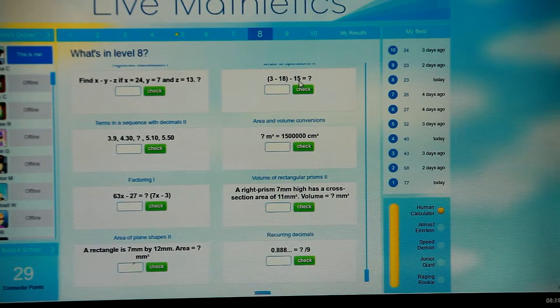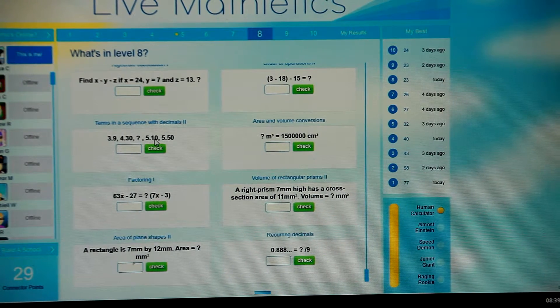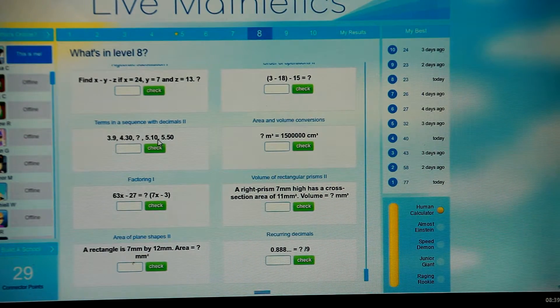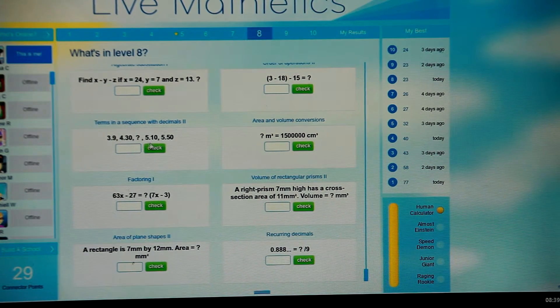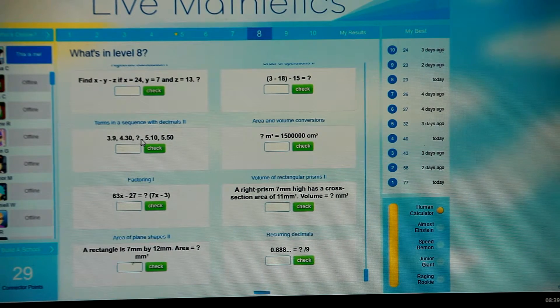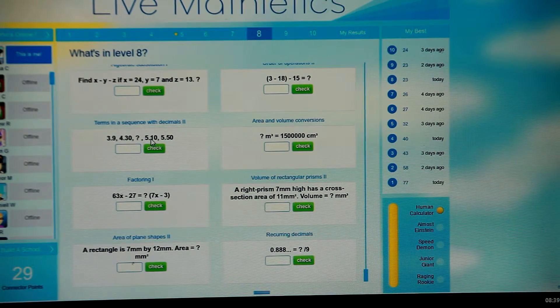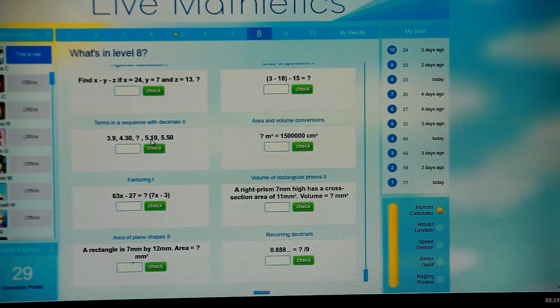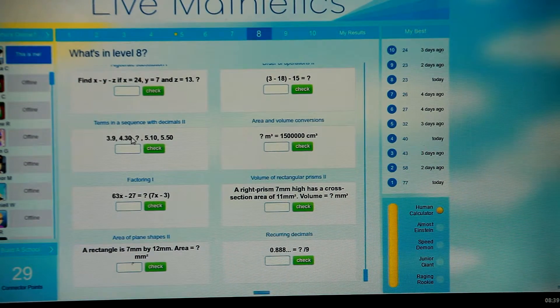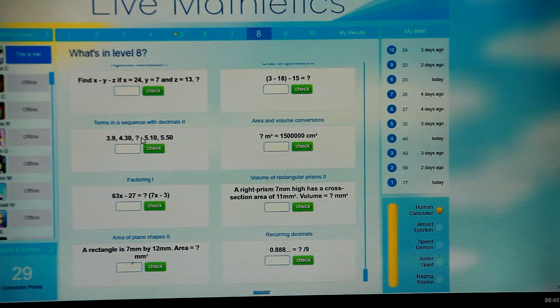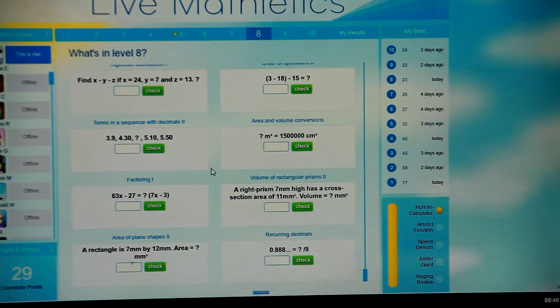In a sequence like this, you're looking for the average between the two figures on either side. If you can see that it appears to be going up or down by an equal amount with each thing, it's called an arithmetic progression. So you can add 4.3 and 5.1, and that gives you 9.4, and you can divide that by 2 to get 4.7. So you go 3.9, 4.3, up by 0.4 to 4.7, up by another 0.4 to 5.1.